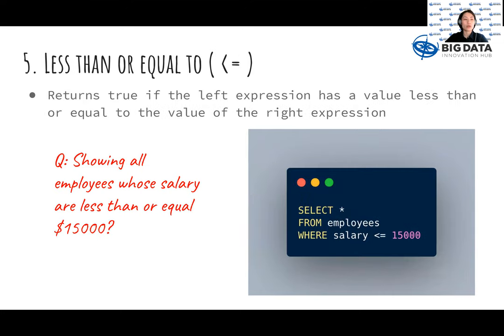Fifth, the less than or equal to returns true if the left expression has a value less than or equal to the value of the right expression. The example shows all employees whose salaries are less than or equal to fifteen thousand.